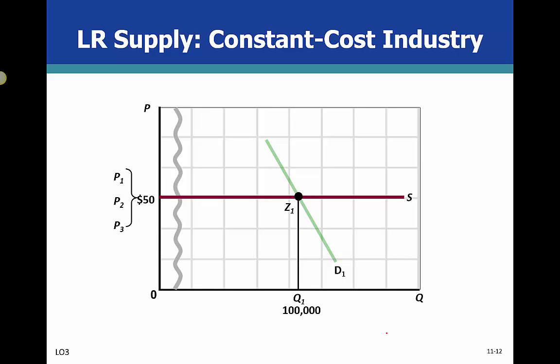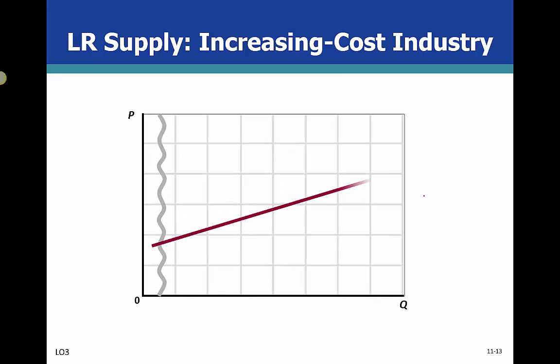This is the constant-cost industry. In this case, supply is going to be horizontal. The price doesn't really go up or down, so it doesn't necessarily matter where we produce. Average total cost will be what it is. In an increasing-cost industry, our average total cost will continue to rise. That means our price, in order to increase output, has to go up to get this new supply level and operate at that level in the long run.